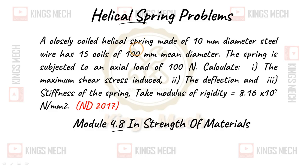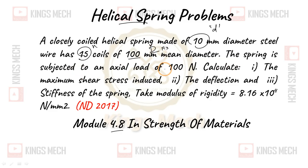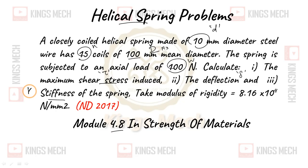A closely coiled helical spring made of 10 mm diameter steel wire has 15 coils (N), 100 mm mean diameter D. The spring is subjected to an axial load W of 100 N. Calculate the maximum shear stress tau, the deflection delta, and the stiffness of the spring K.